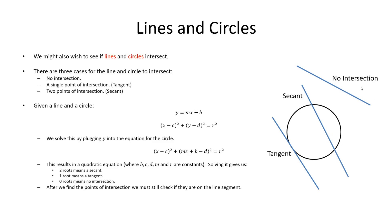There could be no intersection at all. There can be what we might normally think of as a secant, where the line goes in one side of the circle and out the other side. And then there's also going to be the tangent, which is the special case where there's only exactly one point of intersection — where the line touches the edge of the circle ever so slightly. The math we use will uncover these three possibilities: no intersection, one intersection, or two intersections.